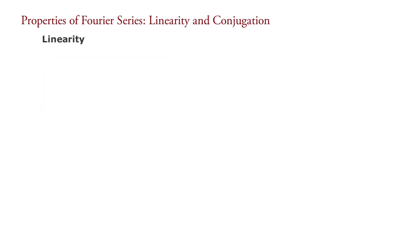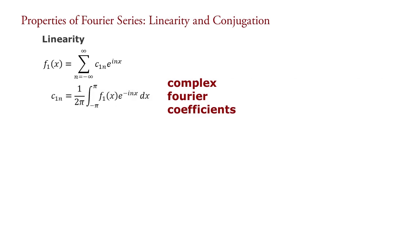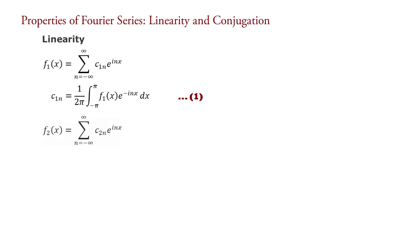Let us try to understand this property in detail. Consider a Fourier signal f1(x) equal to summation n equals minus infinity to infinity of c1n into e raised to inx, with period 2 pi. Therefore its complex Fourier coefficient is written as c1n equal to 1 upon 2 pi, integral minus pi to pi of f1(x) e raised to minus inx dx — say equation 1. Also consider another Fourier signal f2(x) equal to summation n equals minus infinity to infinity of c2n into e raised to inx, and c2n equal to 1 upon 2 pi integral minus pi to pi of f2(x) e raised to minus inx dx — say equation 2.